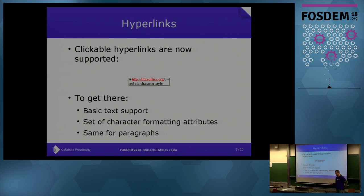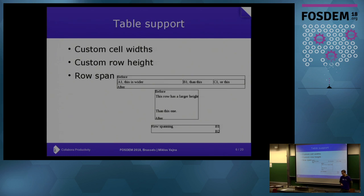One frequently used feature in e-books is hyperlinks. This was the first non-basic text feature I was focusing on. To be able to fully handle hyperlinks, you need support for all paragraph and character styles and all the inheritance of that. At the end we have hyperlink support and hopefully the result will appear in your EPUB the way you saw it in Writer.